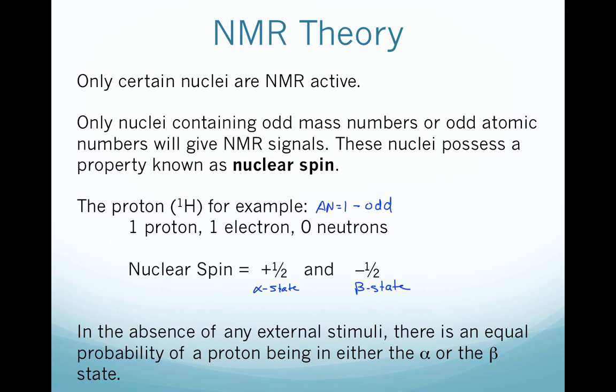In the absence of any external stimuli, specifically a magnetic field, there's an equal probability of a proton being in either the alpha or the beta state. So there's really no preference there at the same energy.